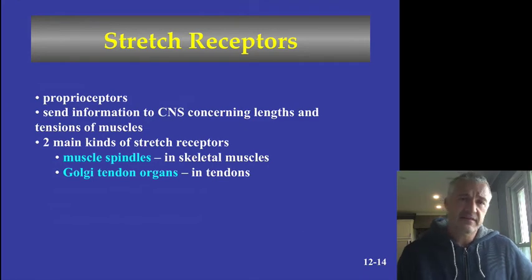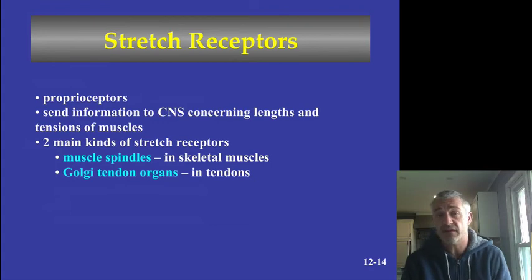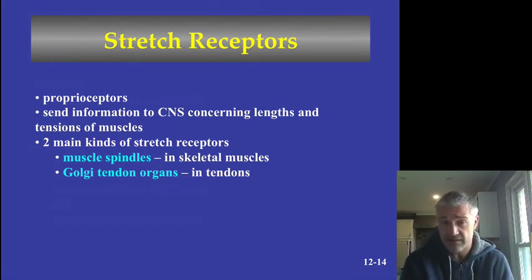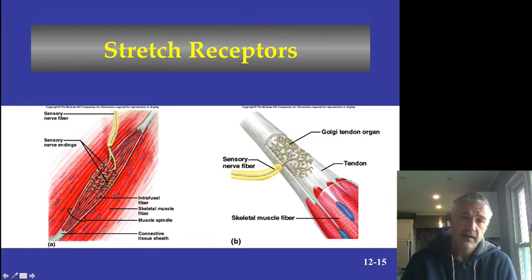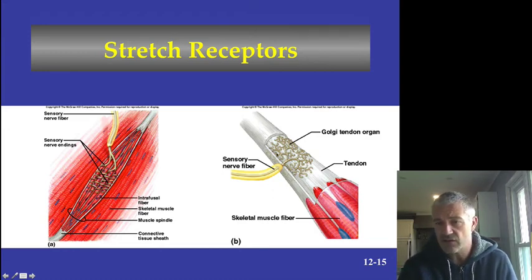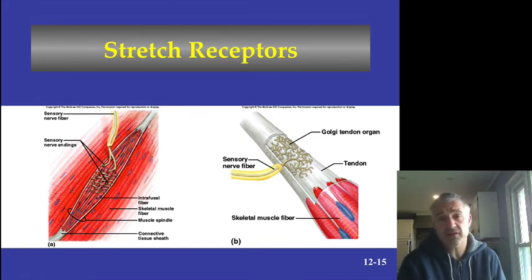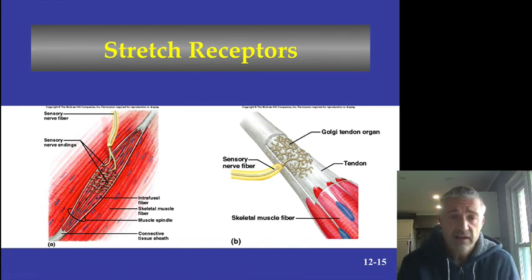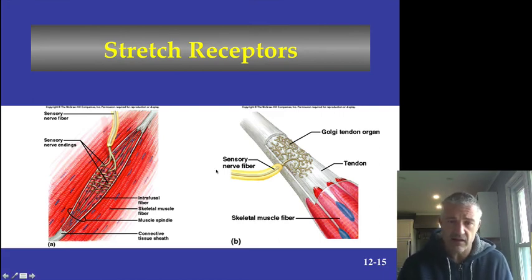The last type of general sense receptors are proprioceptors, which detect body position and tension in muscles and tendons. There are two types: muscle spindles, which wrap around muscle fibers and signal how contracted they are, and Golgi tendon organs, which detect tension by sensing how much that structure is being pulled apart. They work together to give your nervous system a picture of body position.